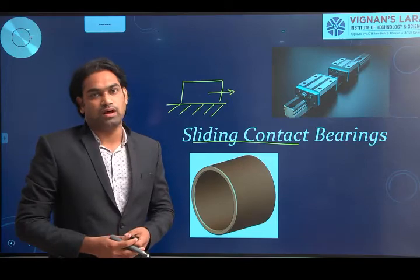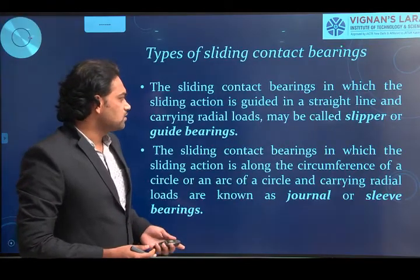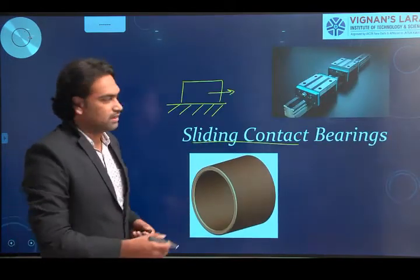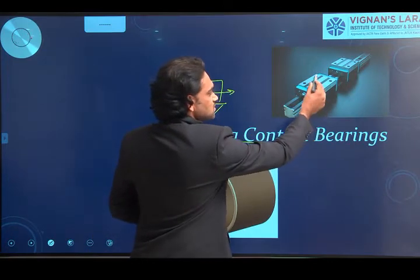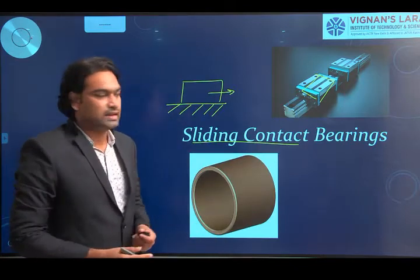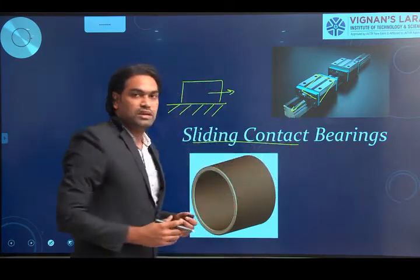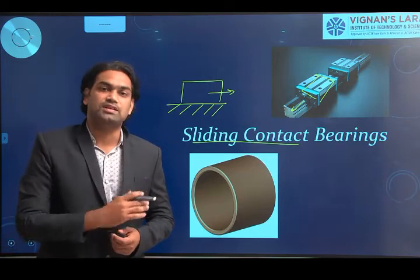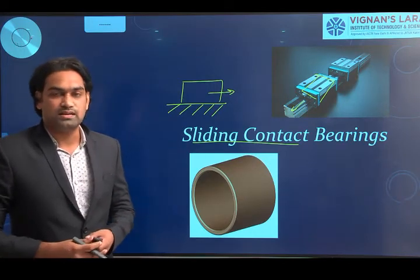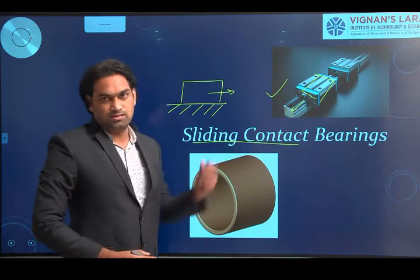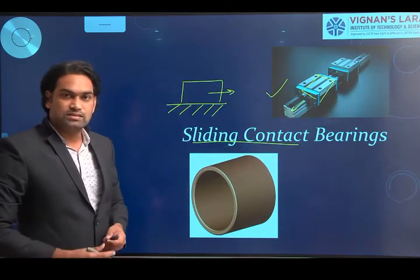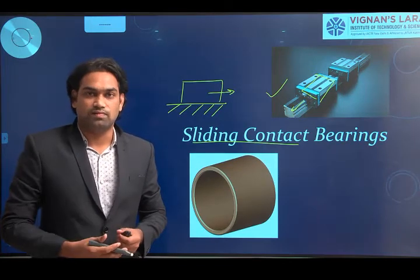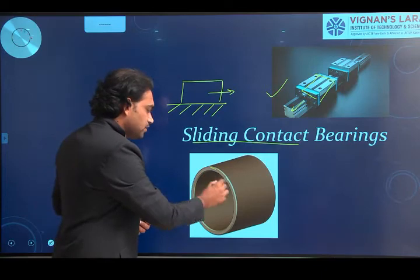Coming to the types of sliding contact bearings: there are two types based upon the sliding motion. For example, if a machine block slides upon a slider forming a straight-line motion — that is, the sliding action takes place along a straight line — we call it a slider or slipper bearing. If the sliding action takes place around the circumference, or along an arc of circumference (partial circumferential motion), that bearing we call a sleeve or plane bearing.